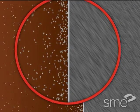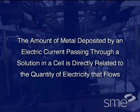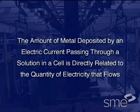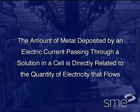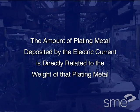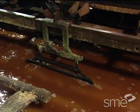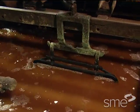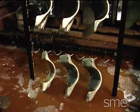This process, known as electrolysis, was explained in 1883 by Michael Faraday and is known as Faraday's Law. In summary, it states that the amount of metal deposited by an electric current passing through a solution in a cell is directly related to the quantity of electricity that flows. Further, the amount of plating metal deposited by the electric current is directly related to the weight of that plating metal. This relationship determines the plating time and electric current required to deposit a specific thickness of a metal within an electroplating operation.